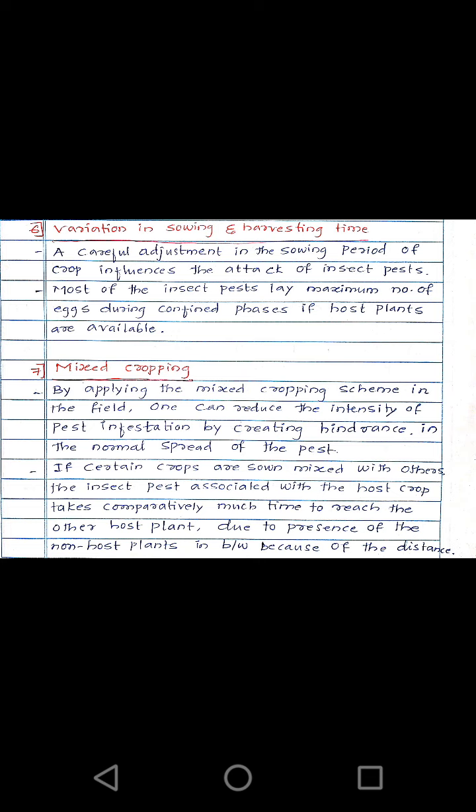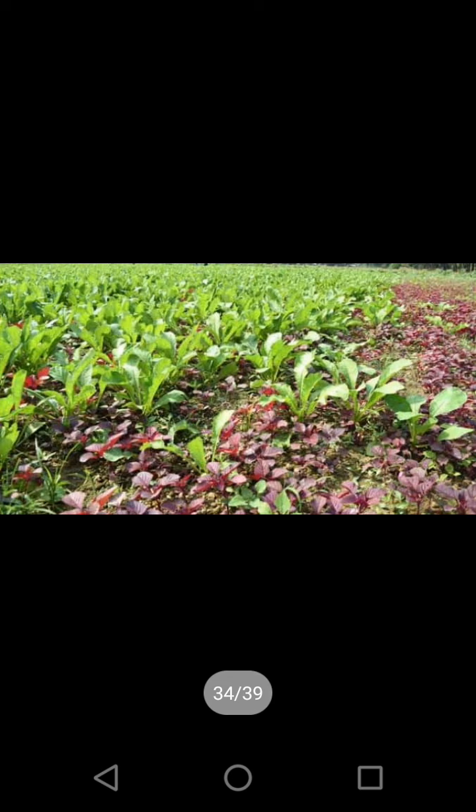Another method is mixed cropping. By applying a mixed cropping scheme in the field, one can reduce the intensity of pest infestation by creating a hindrance in the normal spread of pests. If certain crops are sown mixed with others, insect pests associated with the host crop take comparatively much more time to reach another host plant due to the presence of non-host plants in between.